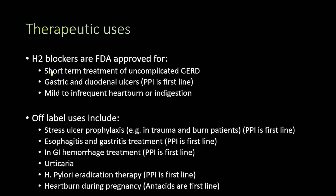The H2 receptor antagonists are FDA approved for short-term treatment of uncomplicated gastroesophageal reflux disease. They are used short-term due to the possibility of developing tolerance, which will be explained in the adverse effects section. They are also FDA approved for treatment of gastric and duodenal ulcers, though they are second line because proton pump inhibitors are the first line for peptic ulcer disease.